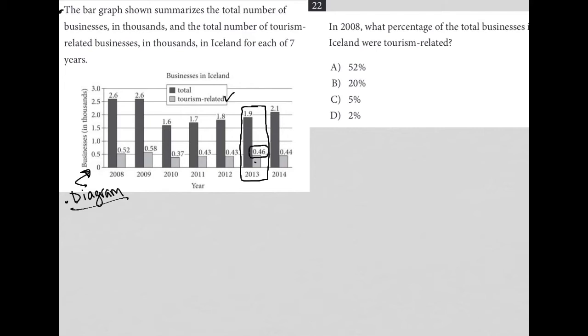The light gray bar represents tourism-related businesses. Because we're dealing with thousands, it's not actually 0.46 businesses, right? It's 0.46 times 1000, which is 460. So there are 460 tourism-related businesses and total number of businesses will be 1.9 times 1000, which is 1900. So that gives me the confidence that I understand how to read this graph.